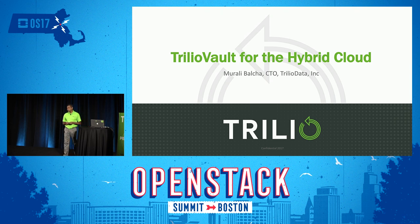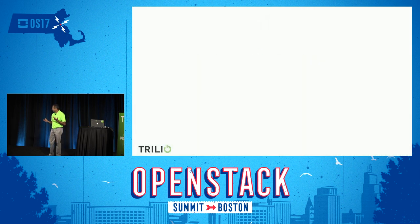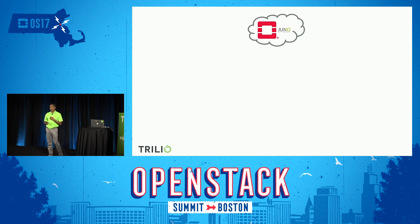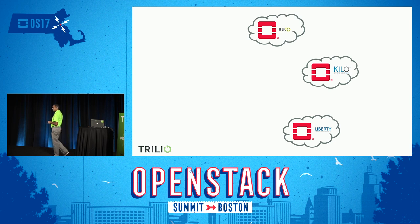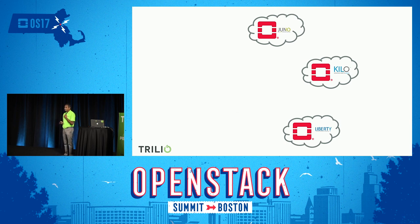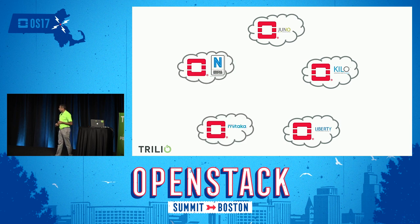Our product is called Trilio Vault. We'll discuss how Trilio Vault can be leveraged as an enabler for the hybrid cloud. Most of the time, customers deploy multiple versions of OpenStack, because that's how the journey goes with OpenStack. They may have Juno or Kilo or Liberty in production, and then they want to upgrade to a new version. They set up a new OpenStack version, test it out, and then gradually do a rolling upgrade or gradually failover the workloads onto the new OpenStack. This is a journey of OpenStack — this is how you deploy and manage it.